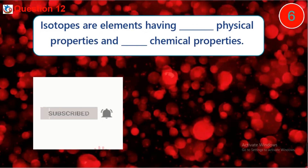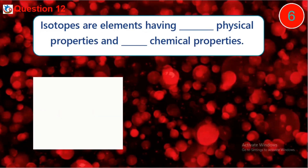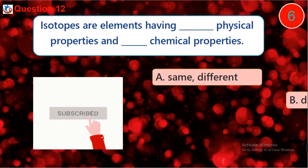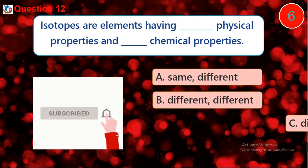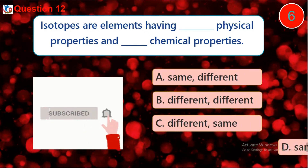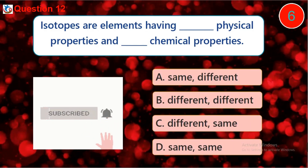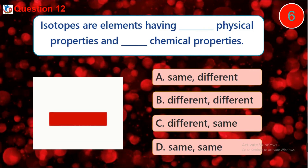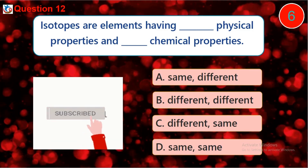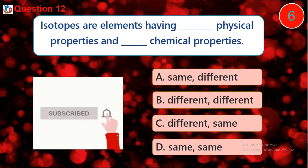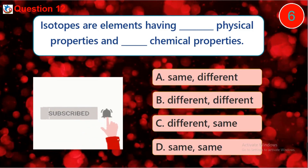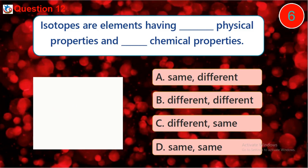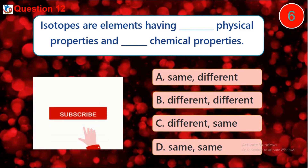Question twelve: isotopes are elements having dash physical properties and dash chemical properties. A. same, different, B. different, different, C. different, same, D. same, same.